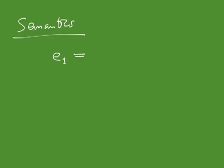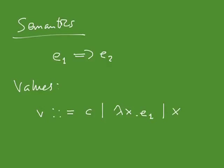Next, I present the semantics. I won't cover all the rules because there are many, but the idea is that it's again a small-step semantics where transitions are of the form e1 can evolve in a single step to e2. Values in this semantics are expressions in normal form: constants, abstractions, and variables. The semantics I'll give is a call-by-value semantics, whereas we looked at call-by-name for the pure lambda calculus.